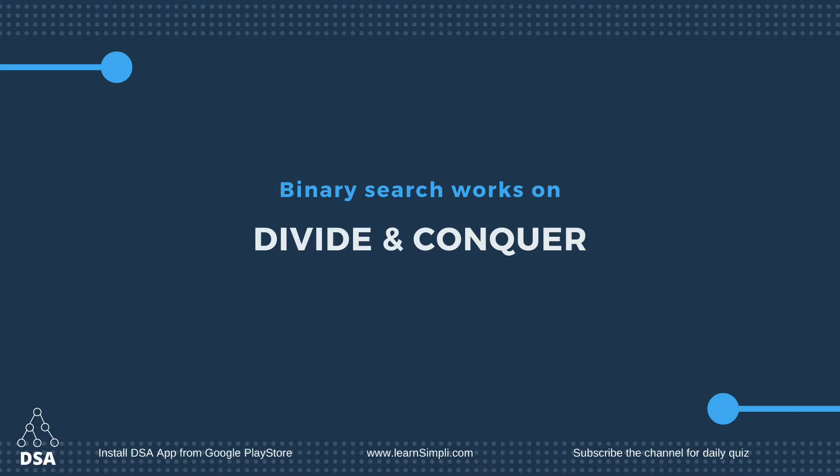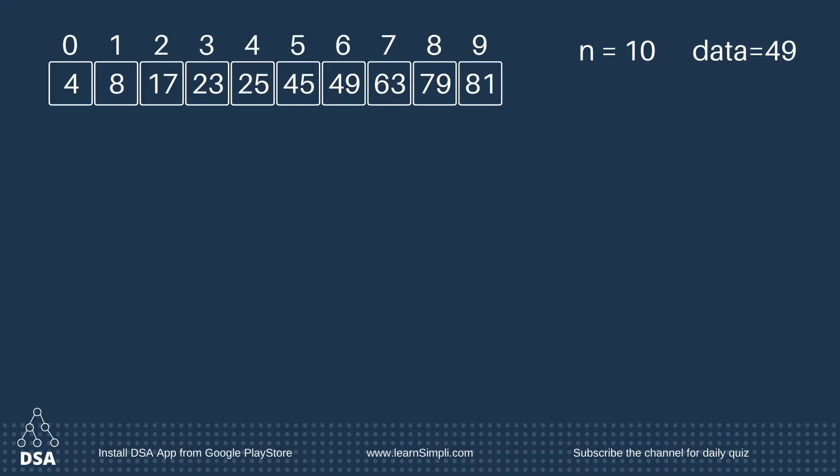To understand the working of binary search algorithm, let's take a sorted array. Here n is equal to 10 and data is equal to 49 — this is the element we are going to search for. Binary search works on divide and conquer technique, meaning it is going to divide the array into two halves.